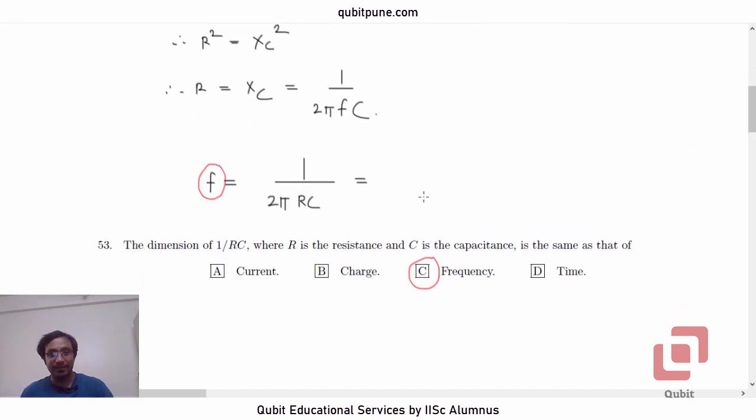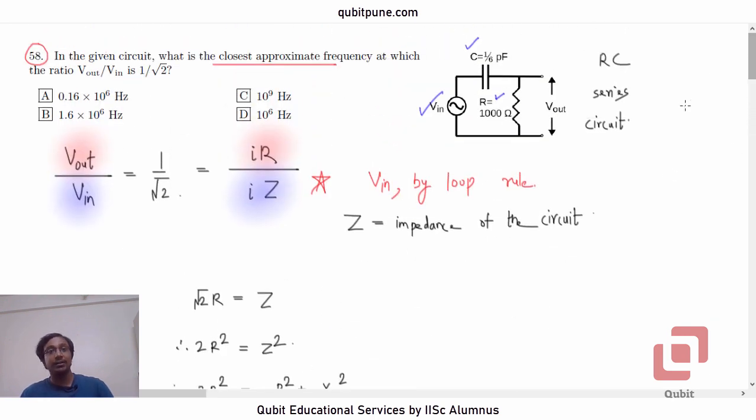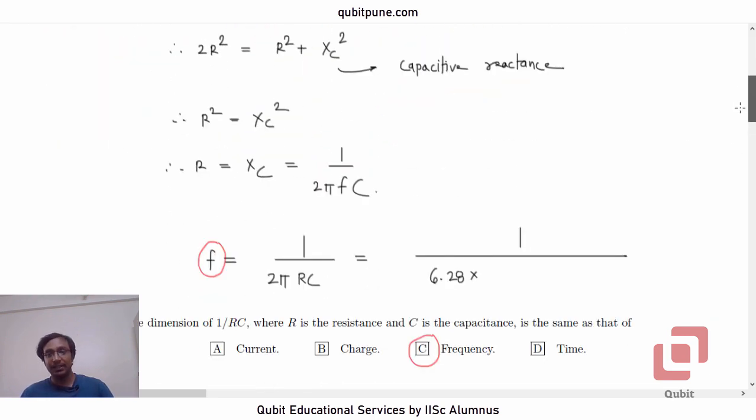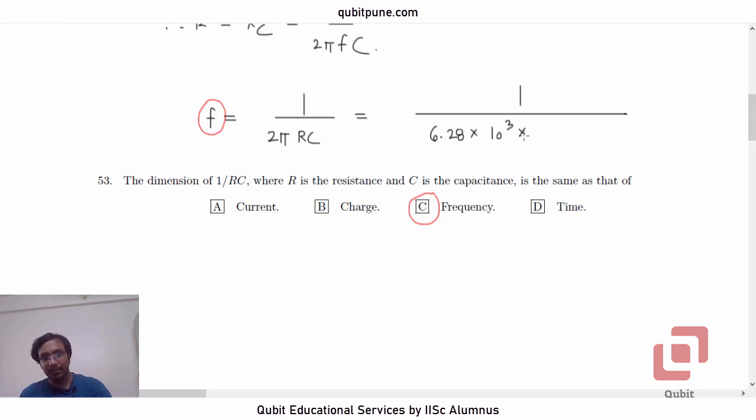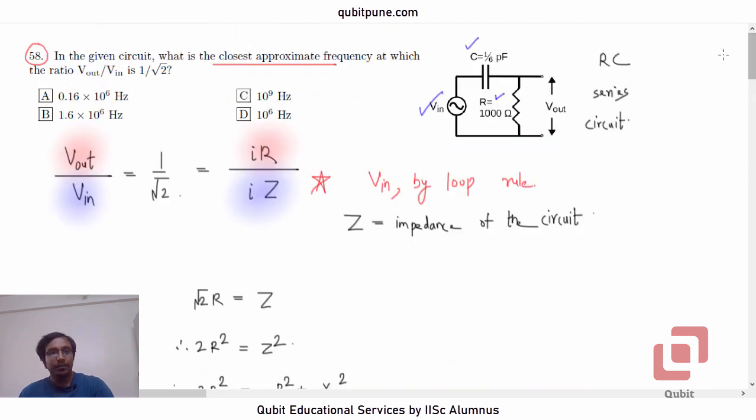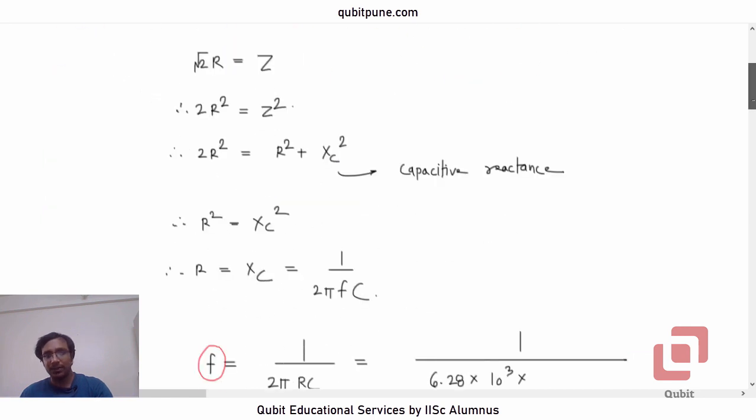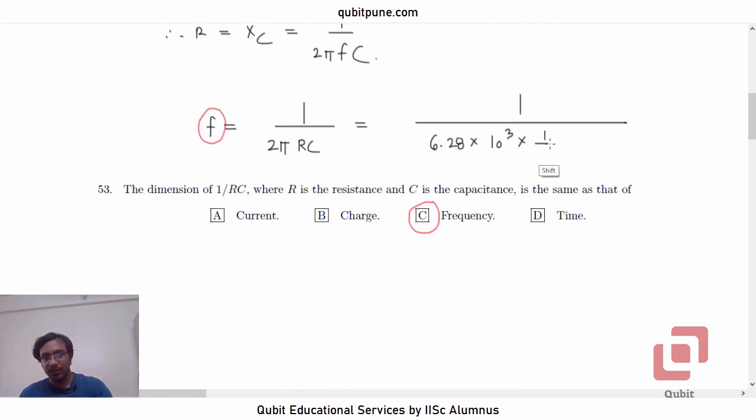Anyways, let us continue solving. We need to substitute the values now. 2 pi, let us say 2.2. Anyways, we want to find the approximate value. So, approximate value of 2 pi is 6.28 into R, 1000. R is 1000, 10 raised to 3. Capacitance, 1 by 6 pi, 1 by 6 into 10 raised to negative 12. Pico is 10 raised to negative 12, remember that.